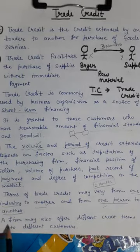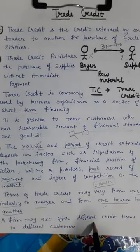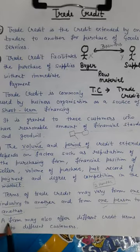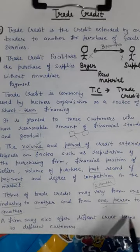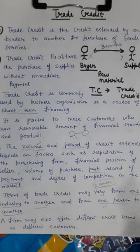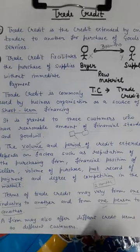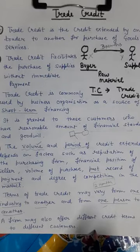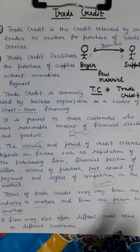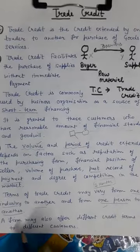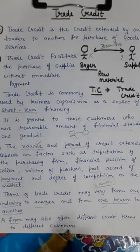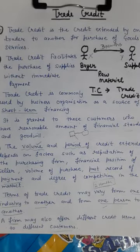A firm may also offer different credit terms to different customers. For example, one customer may be told to pay within 10 days, while another customer is given one month to pay. So the company can offer different terms to different customers.